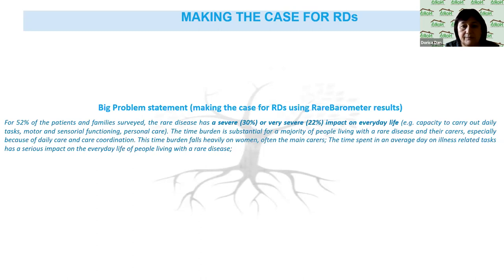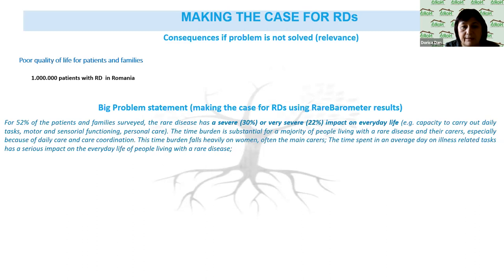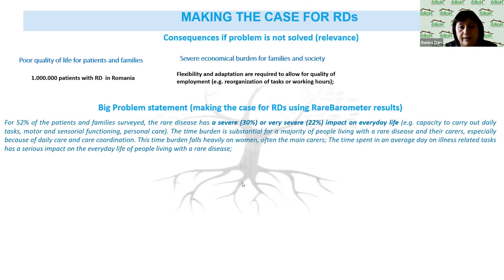We tried to demonstrate to national authorities that if we take the right measures, we can reduce the waiting time for patients and families and produce economies for the healthcare system. We also showed that if we don't solve this problem, families and patients will continue to have poor quality of life, severe economic burden for families and society, and we need flexible workplaces to allow patients and parents to work and adapt the system to people in need.